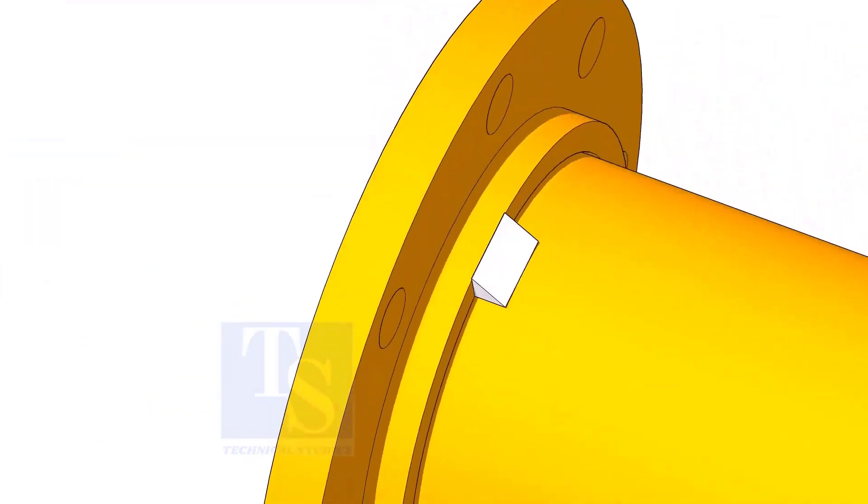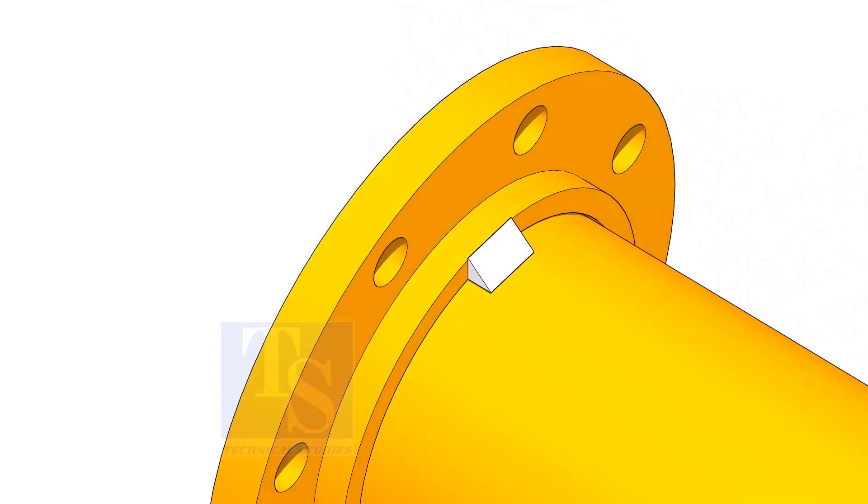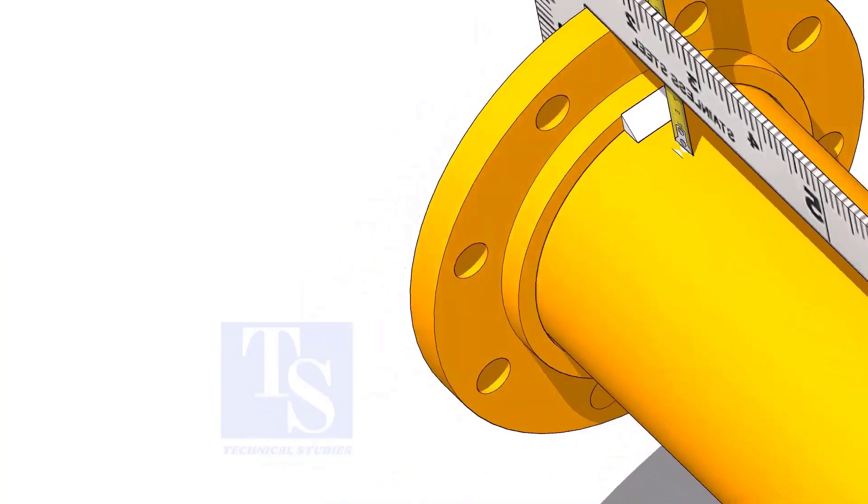Tack weld on the top side of the pipe. Correct the squareness and tack weld at the bottom side.